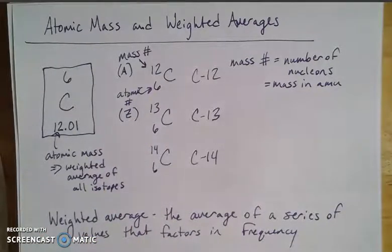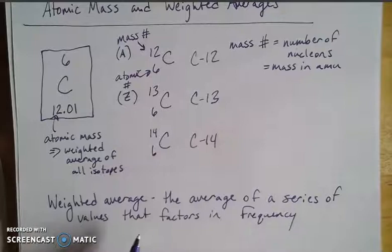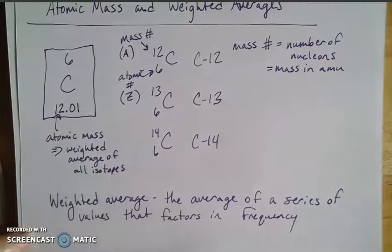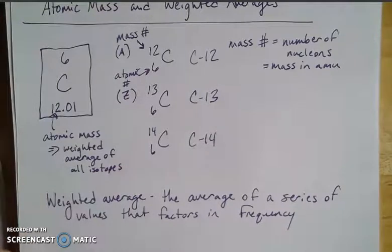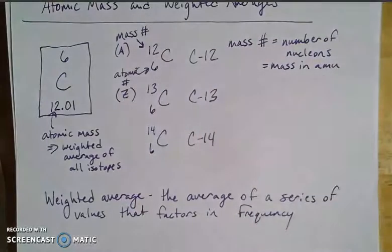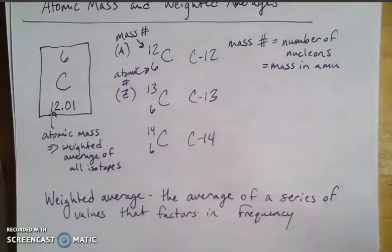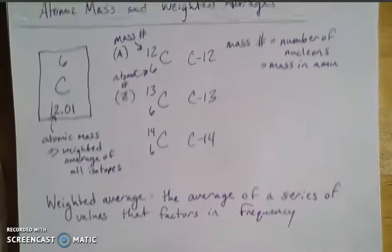The atomic mass reported on the periodic table is a weighted average of all these isotopes. A weighted average factors in the frequency of how often each isotope occurs. Here on Earth, we use the frequencies as we understand them, but the periodic table could look slightly different in other parts of the universe depending on the relative abundances of each isotope.